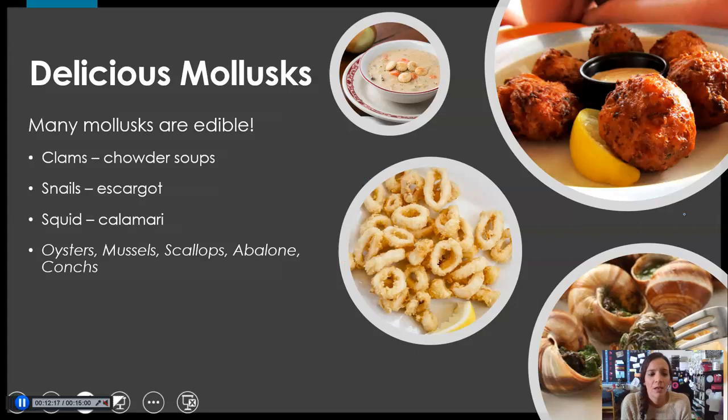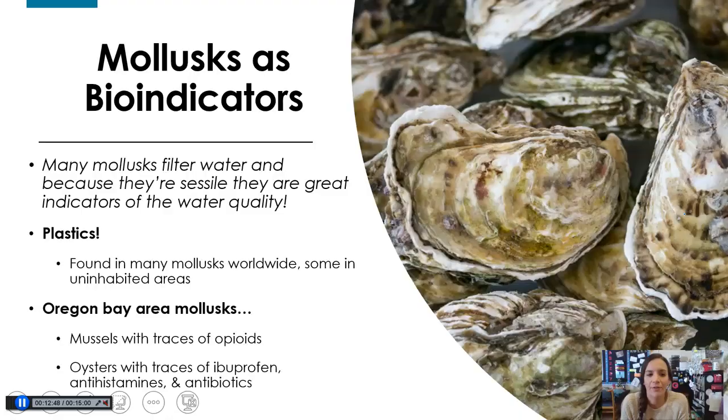Molluscs are also very delicious — so just some fun facts on a few of the different ways people eat mollusks around the world. You have clams, which are common in clam chowder; snails, or escargot, which is a French dish shown in the bottom right; squid is calamari, which is the squid body chopped up into rings and deep fried; and then things like oysters, mussels, scallops, abalone, and conch or conch fritters as seen in the upper right.